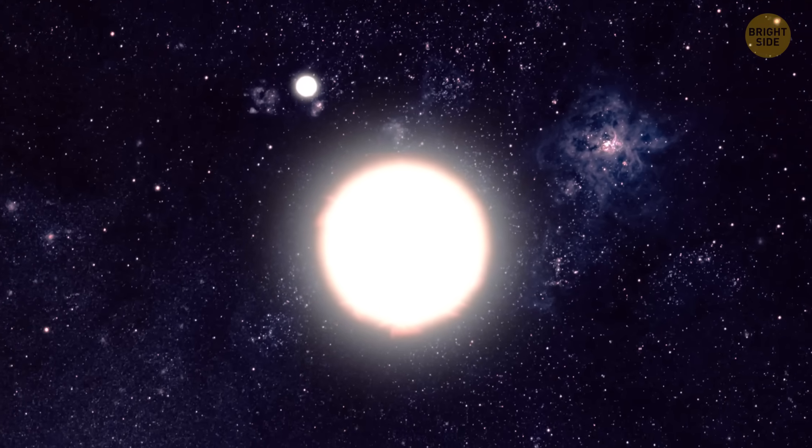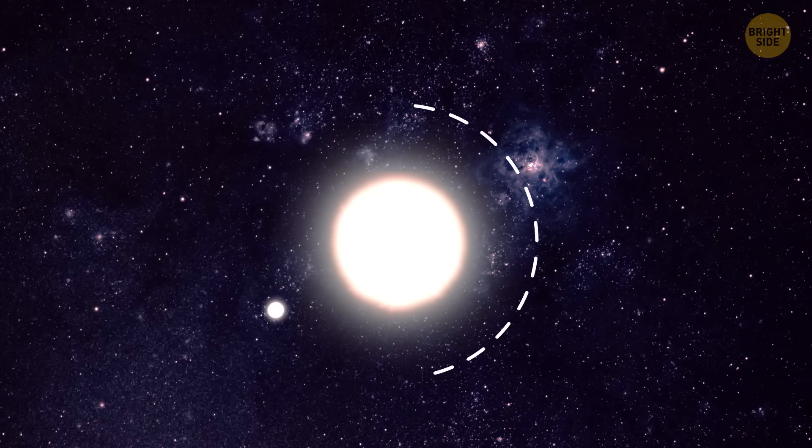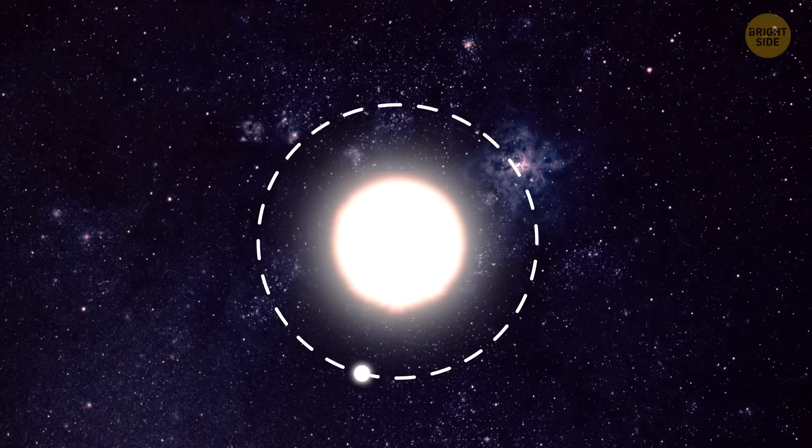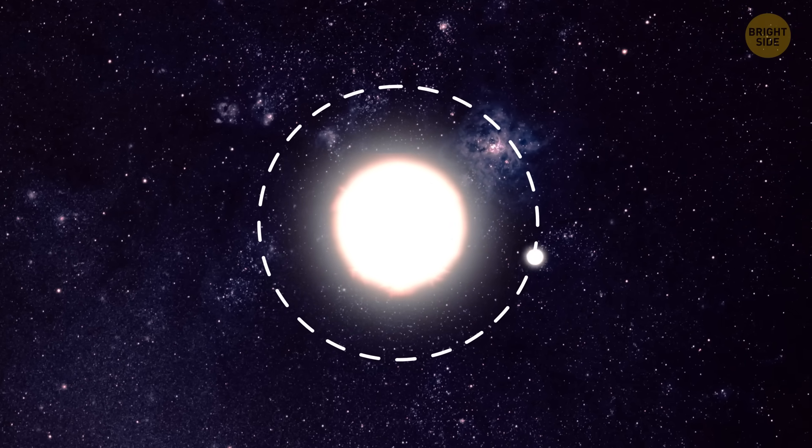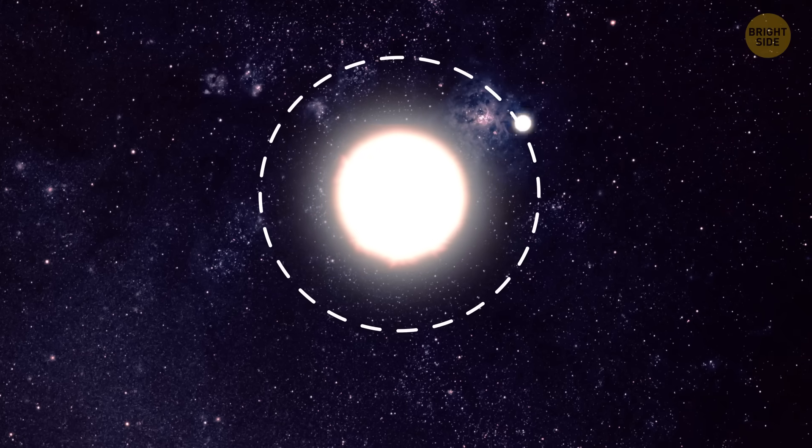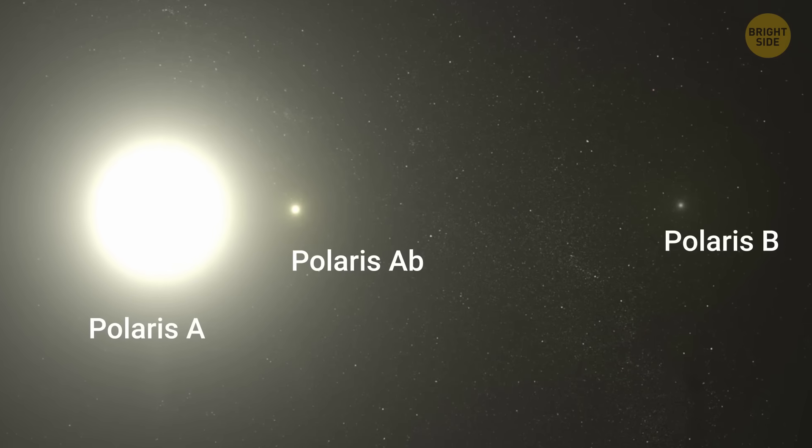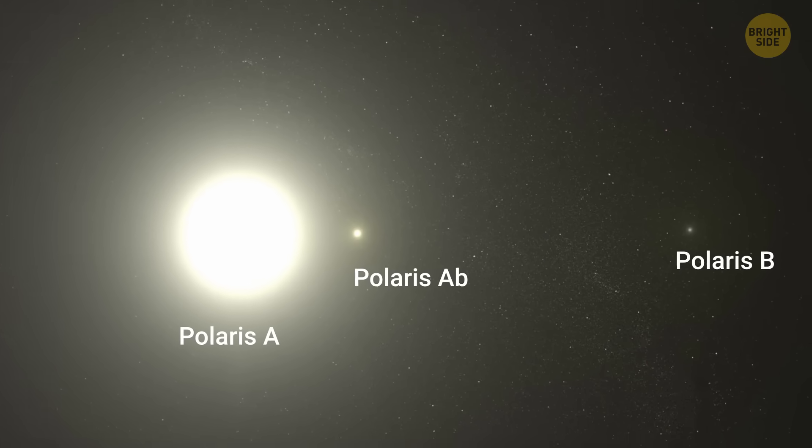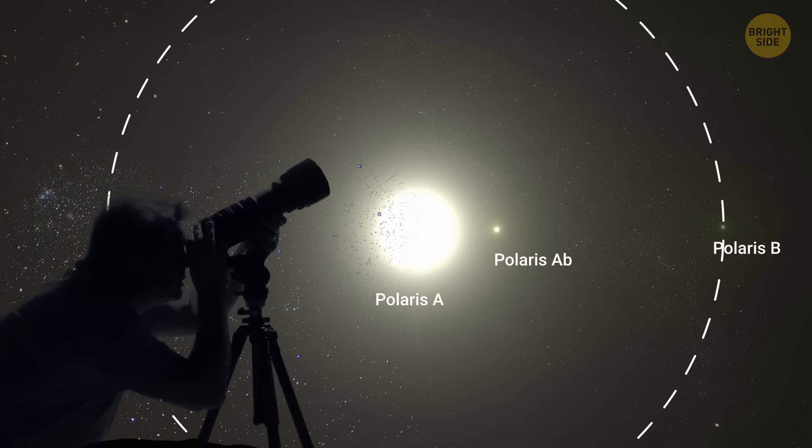Polaris is a so-called astrometric binary. It means you can see its companion going around it. It looks as if a circle is being drawn around the bigger star. To complete one orbit, the smaller star needs around 26 years. Even though astronomers haven't made detailed observations of Polaris B's full circuit, they've seen enough to know what its orbit looks like.